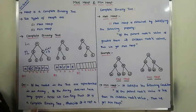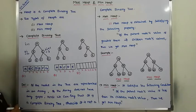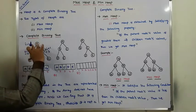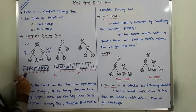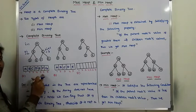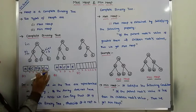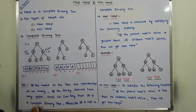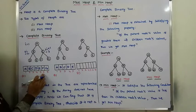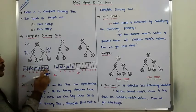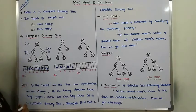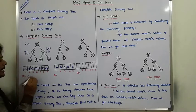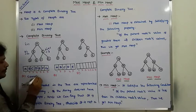So now, another definition of complete binary tree is: if the nodes in the binary tree are represented in an array and there are no gaps in that array, hence we can say that it is a complete binary tree. In this given array representation, there are no gaps, hence it is a complete binary tree.